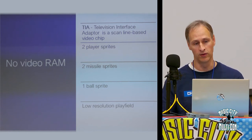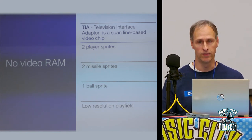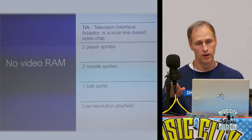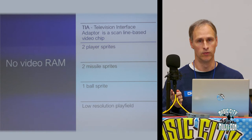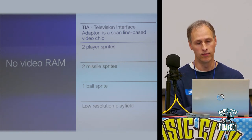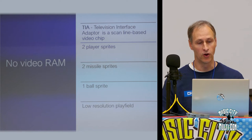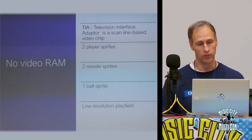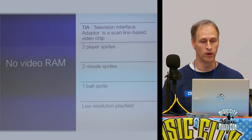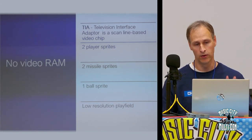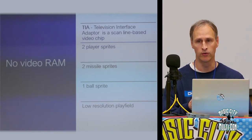There's also a ball sprite, similar to the missile — 1-bit, colored the same as the playfield. Then the low-resolution playfield is 40 playfield pixels wide but the pixels are very chunky. The missile sprites share the color of the player sprites. Those five sprites and the low-resolution playfield are what you have — no matter what ARM processor you throw at it, you still need to squeeze all your data into these five registers at the proper time to render your screen.